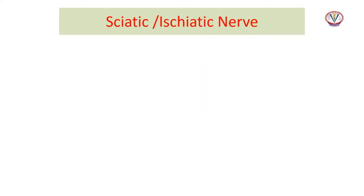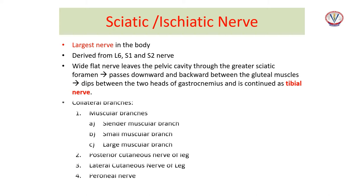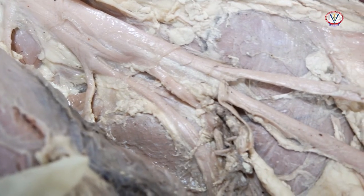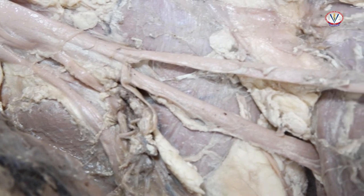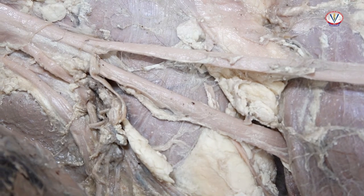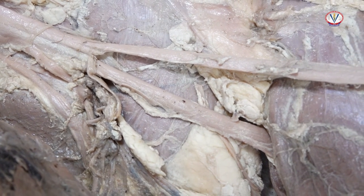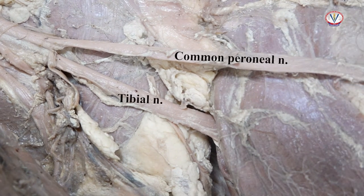The sciatic nerve is the largest spinal nerve in the body; its fibers are derived from the last lumbar spinal nerve and the first two sacral nerves. It is a wide flat nerve that leaves the pelvic cavity through the greater sciatic foramen, passes downwards and backwards between the gluteal muscles, dips between the two heads of gastrocnemius, and is continued as the tibial nerve. The collateral branches include muscular branches, cutaneous branches, and the common peroneal nerve.